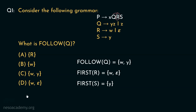Now check out the options. Option A cannot be the correct choice. Similarly, B can also not be the correct choice. Coming to D, it actually includes Epsilon, and we already know in follow we are never going to have Epsilon. That leaves us with option C, which is the correct choice as it includes the symbols W and Y.